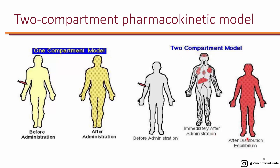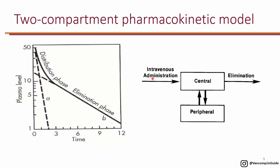One compartment is the central compartment, which is basically circulation. The second compartment is when vancomycin goes from the central compartment to the peripheral tissue. As we administer vancomycin intravenously, it enters the central compartment and is normally eliminated through the kidneys. However, because it also penetrates peripheral tissue, there is a distribution phase. When you give vancomycin initially, the peak will be very high, then during the distribution phase levels drop quickly, and then it slows down during the elimination phase. This is extremely important when deciding when to get levels — we want to avoid sampling during the distribution phase, which typically takes about two hours.